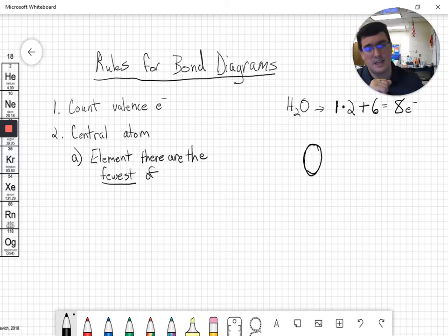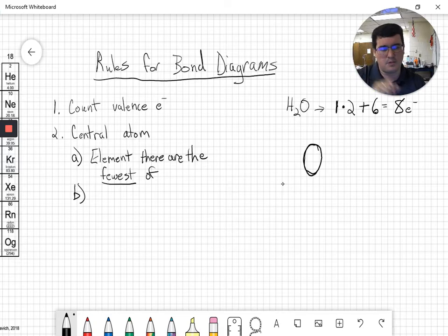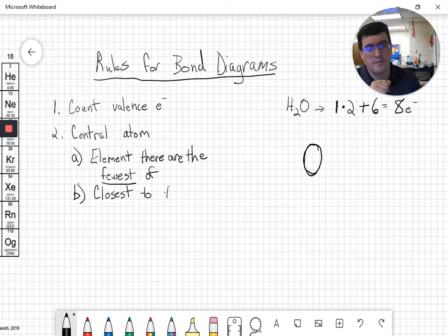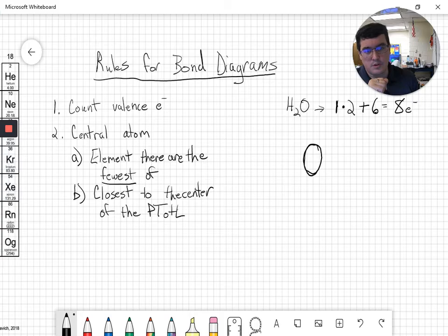The sub-rule B is one that makes a little less sense, but when we get into some further problems, it'll make a little more sense. You pick the element closest to the center, not of the formula, but of the periodic table of the elements, or PEOTE for short.